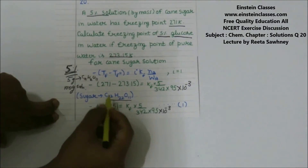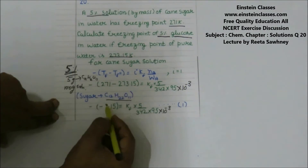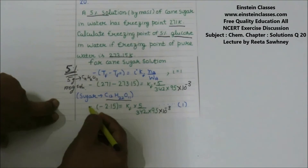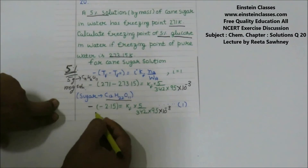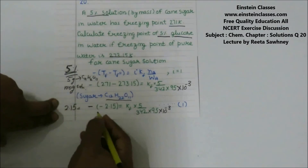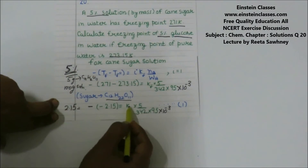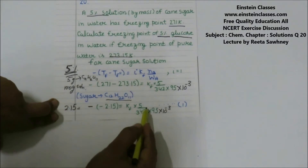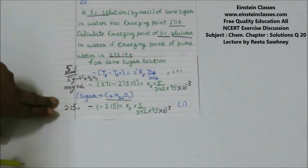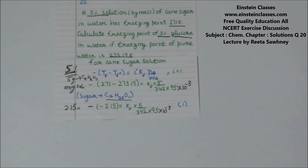The mass of solvent is 95 grams, or 95×10⁻³ kg. Solving the expression, minus delta Tf comes out to be 2.15, which equals Kf × (5/342) / (95×10⁻³). This is our first equation.